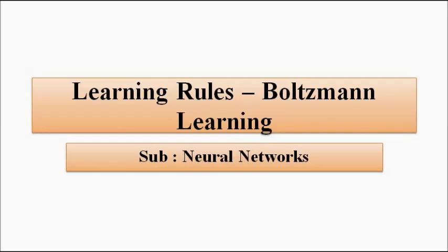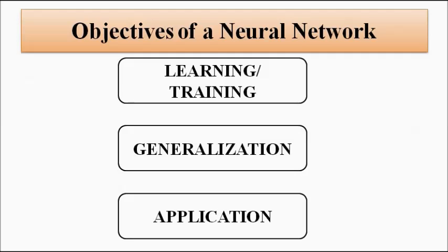Welcome to Engineering Tutorial. We'll continue our discussion on neural networks and cover another important learning rule: Boltzmann learning. The basic objective of a neural network is to expose itself to various kinds of new data in the learning phase, form categories, patterns, and clusters of that data, and then apply the knowledge gained from training to solve real-life problems.